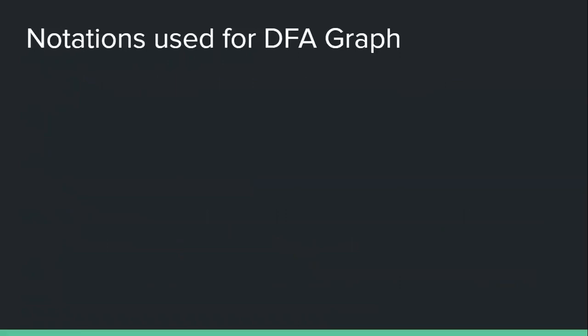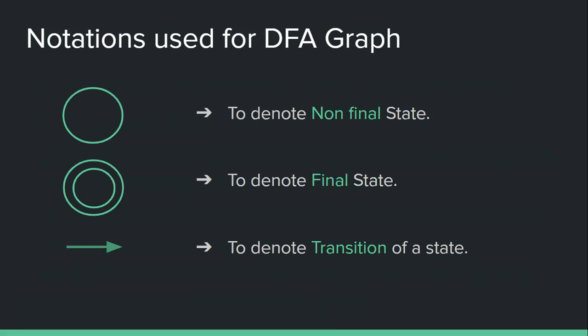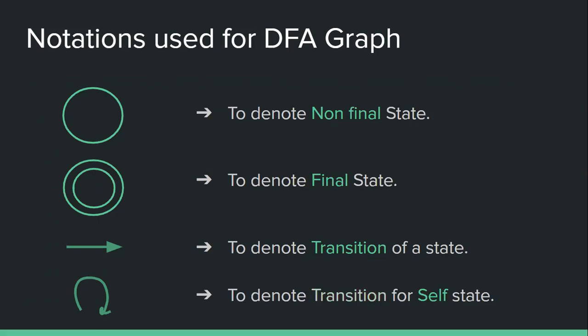Now let's see how to draw this DFA. To draw a DFA we need some notations. The first is a circle, used to denote the non-final state of your automata. Then we have a double circle, used to denote the final state where your string can be accepted. Then we have an arrow, used to denote the transition of a state. And we have a self-loop, which indicates that the transition is for the same state. These are the four notations used to draw a DFA graph.